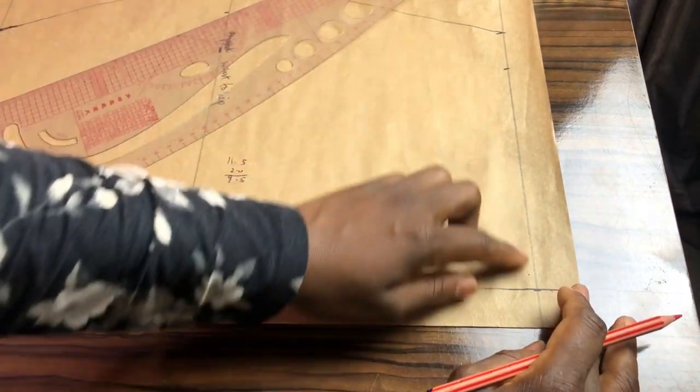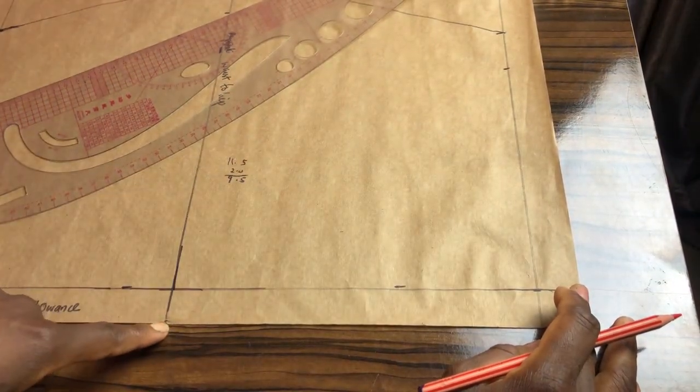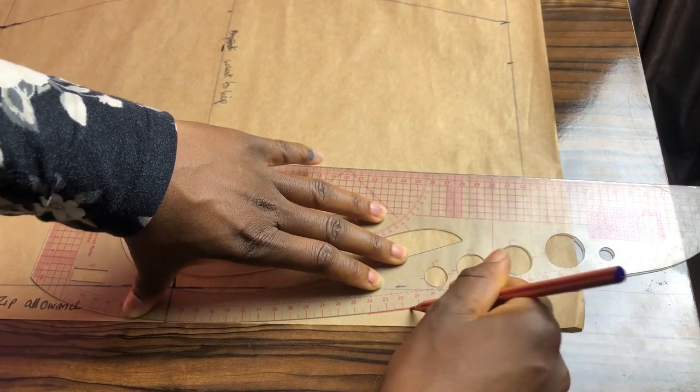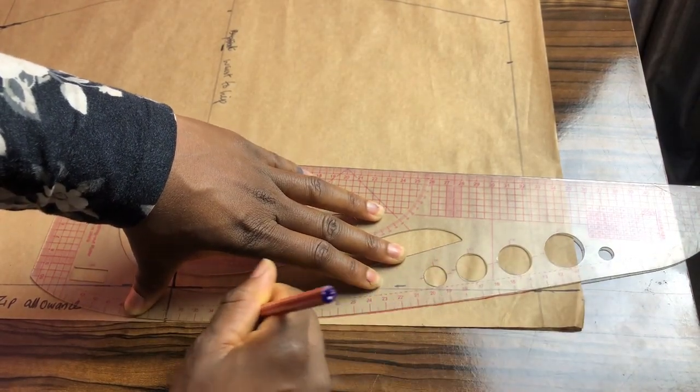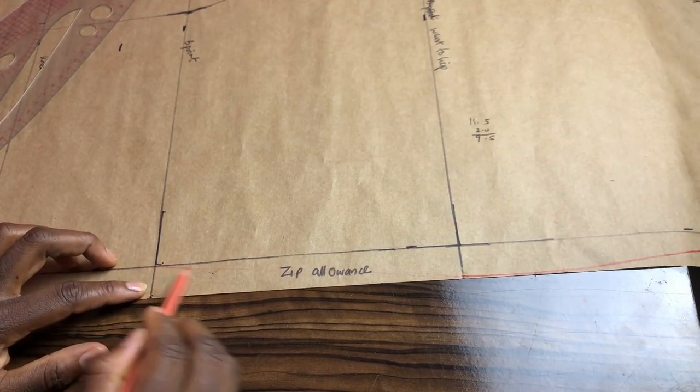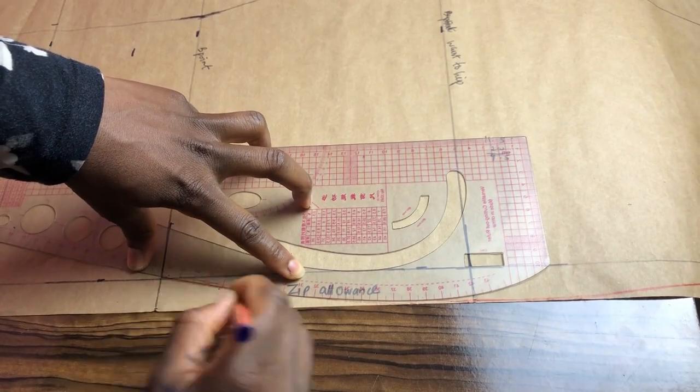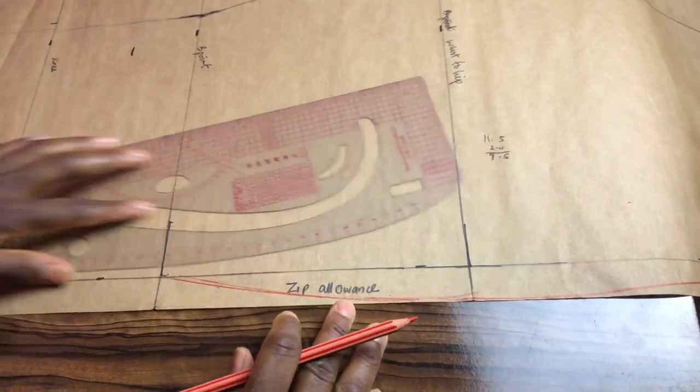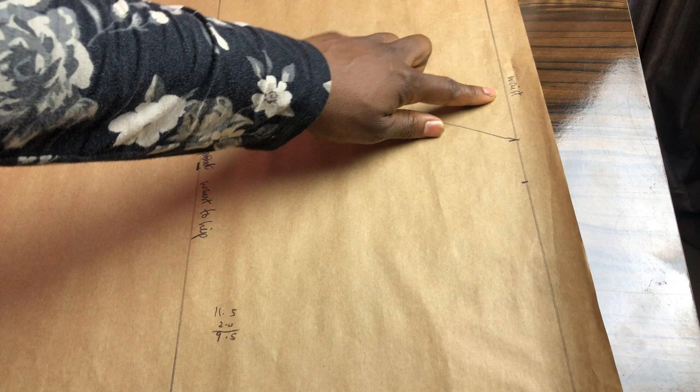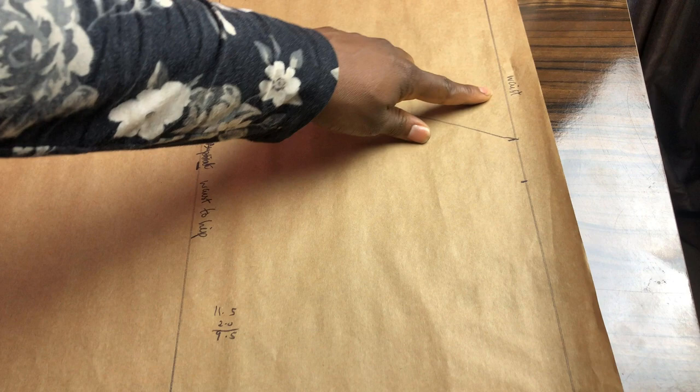Using your curved ruler, connect from the waist to the hip along where you have the zip allowance. And also from the breaking point line, connect upward to the hip line.